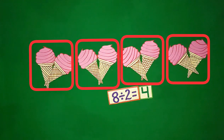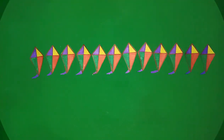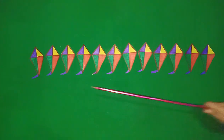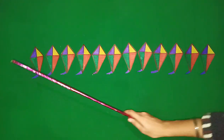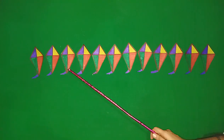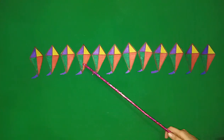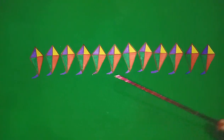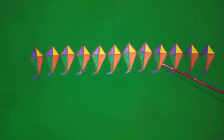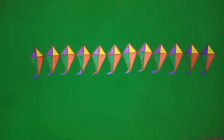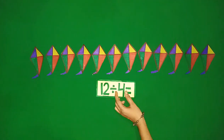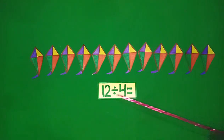Let's try to solve more of these questions. We have some kites. Let's count: 1, 2, 3, 4, 5, 6, 7, 8, 9, 10, 11, 12. Now, we have to make equal groups of 4 kites.